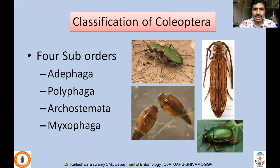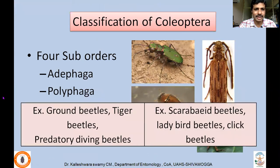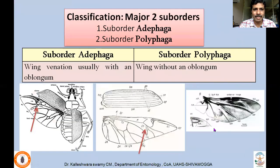There are four suborders under Coleoptera: Adephaga, Polyphaga, Archostemata, and Myxophaga. Only Adephaga and Polyphaga will be discussed as they are the major suborders; Archostemata and Myxophaga are minor suborders. Important representatives of Adephaga are ground beetles, tiger beetles, and predatory diving beetles, whereas Polyphaga representatives are scarab beetles, ladybird beetles, click beetles, etc. Polyphaga is highly diversified.